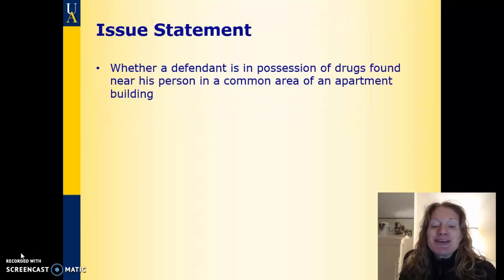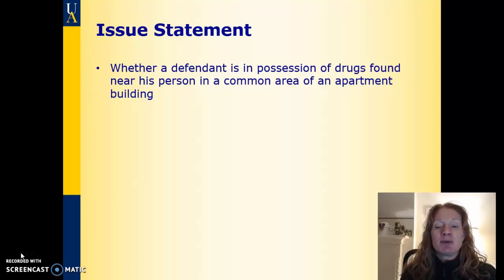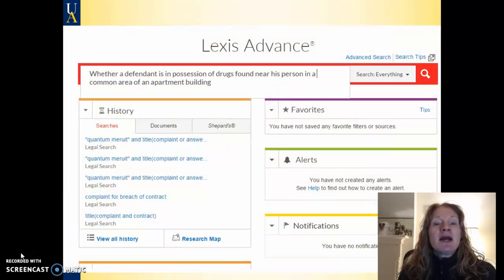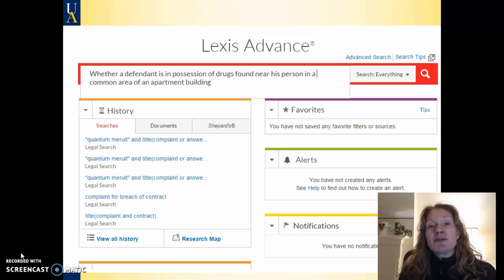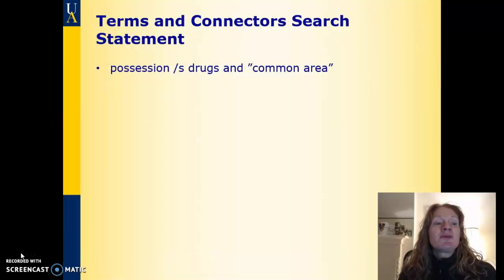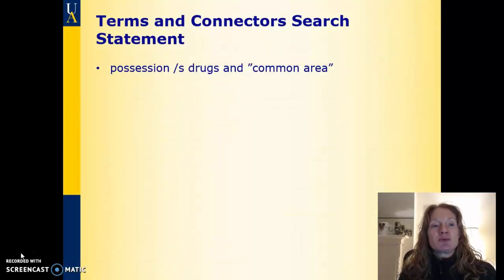From there you can pull together an issue statement: 'Whether a defendant is in possession of drugs found near his person in a common area of an apartment building.' You could use that issue statement as a natural language search in Lexis or Westlaw — just type it in, select your jurisdiction, run the search, and see if you get anything on point. You could further narrow this search using terms and connectors, which we're going to talk about in a bit.